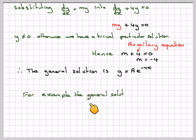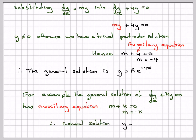For example, the general solution of dy by dx plus ky is equal to 0, constant coefficients 1 and k, has an auxiliary equation m plus k is equal to 0 and therefore m is equal to minus k. The general solution will be y is equal to ae to the minus kx.